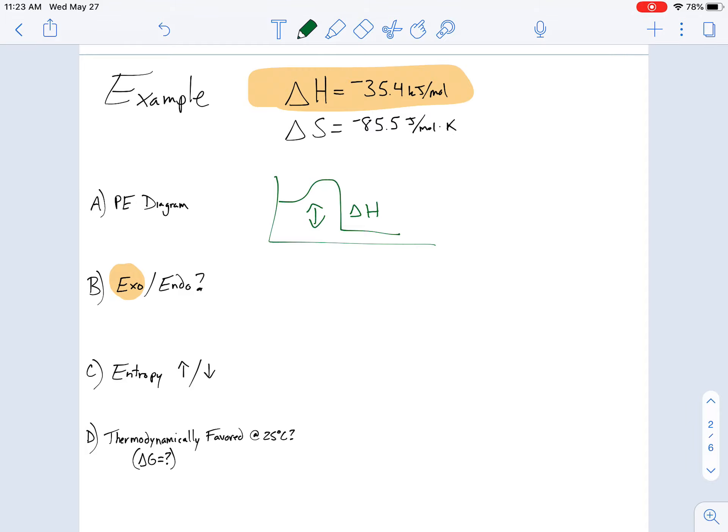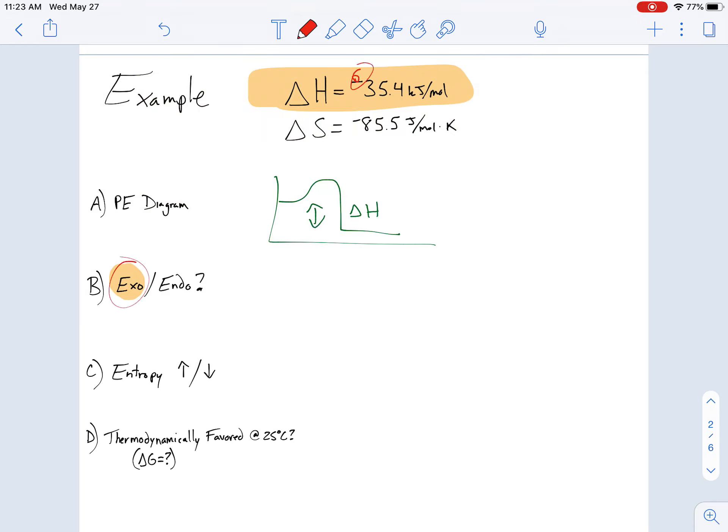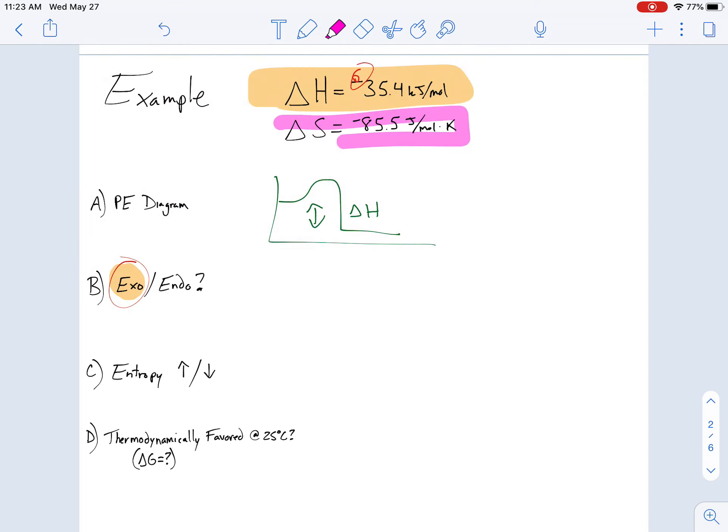My products would have less energy than my reactants, and the difference here would be my delta H between my reactants and my products. I've already covered it's negative, and if it's negative, right? Here, that means it's exothermic. Is entropy increasing or decreasing? Now I have to look at S for entropy. So, it is a negative value. If it's negative, what does that mean? It's becoming more organized. If it's becoming more organized, entropy decreases.